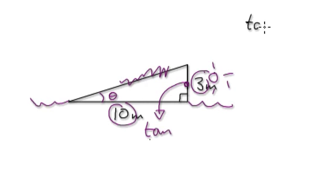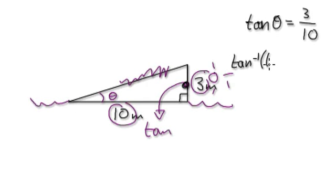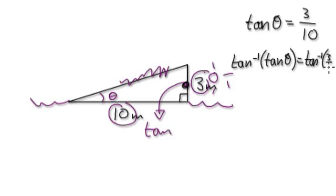So tan the angle, which is theta — we're trying to work out theta — would be 3 divided by 10. Now you want to somehow eliminate the tan so that theta can stand on its own, because we want to find out what theta is. So inside your mind, apply inverse tan to both sides, so it would be: equals inverse tan of 3 over 10.